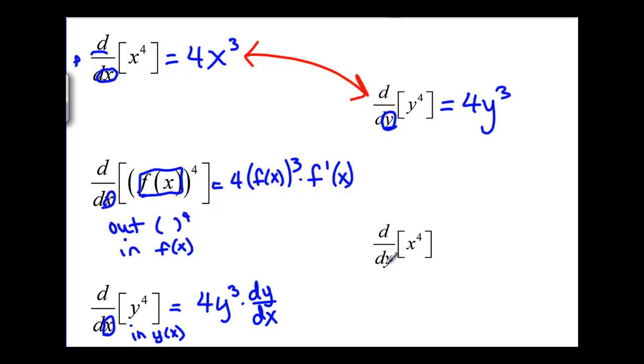Now down here, if we have d/dy of x^4, this problem is the same problem as d/dx of y^4. We have a variable down here that does not match the variable inside. The assumption here is that x depends on y.